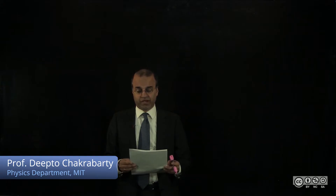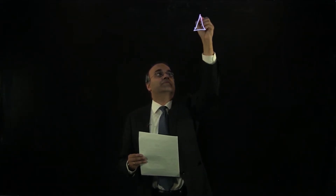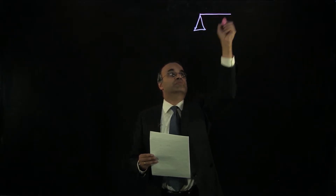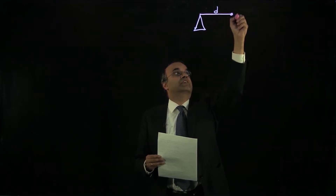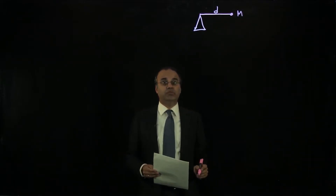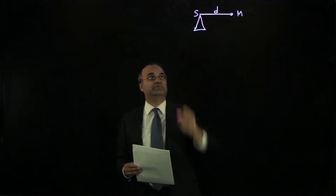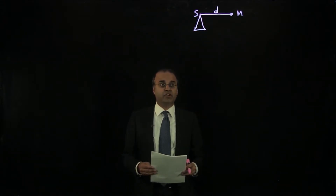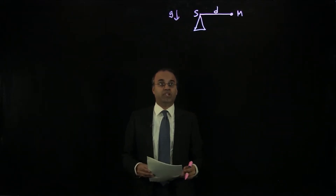A pivoted rod held horizontal parallel to the ground and released from rest will simply fall, rotating about the pivot point. Suppose we have a mass m attached to one end of a pivoted rod of length d. The rod is massless. If I let this go from rest, it will fall, rotating about the pivot point S. This is easy to understand in terms of the action of gravity acting downward and the resulting torque about point S.